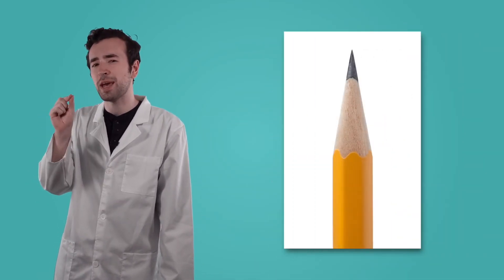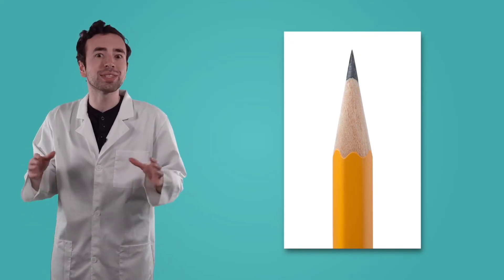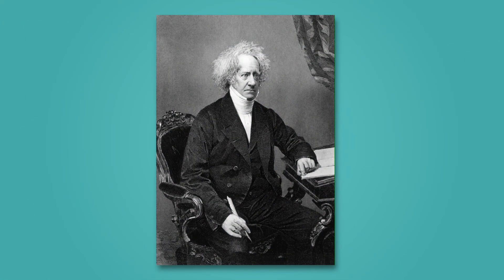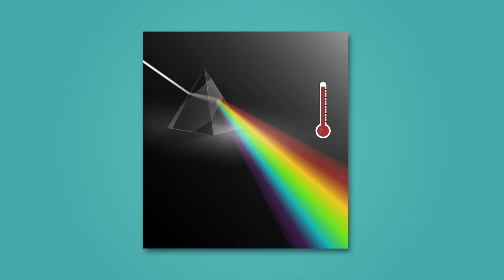While infrared light is invisible to the human eye, we can still sense it in another way — heat. In fact, infrared light was first discovered in 1800, when a scientist named William Herschel was measuring for differences in the temperature of light in the visible spectrum. He observed an increased temperature reading from violet to red, but was surprised to find the highest temperature was beyond the red end of the spectrum, where there didn't appear to be light at all. He had discovered infrared light.